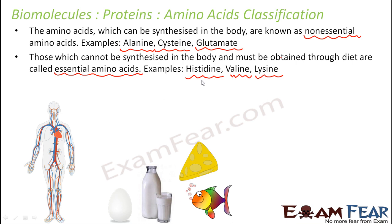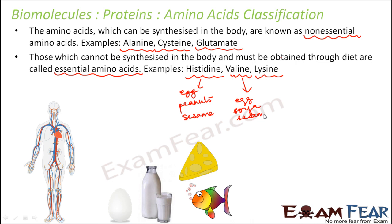For histidine, good food sources include egg, soya beans, peanuts, and sesame. For valine, egg, soya, and sesame are again good sources. For lysine, egg, soya, and fish are good sources. Egg and soya are a very rich source of protein overall, which is why all these protein-rich foods should be included in your diet.